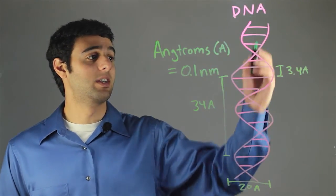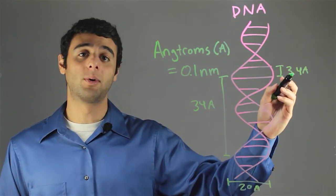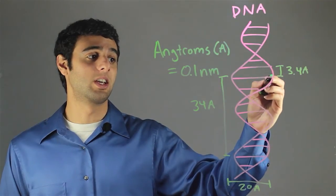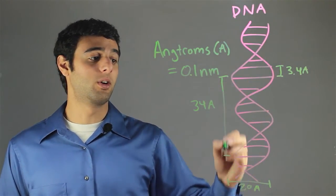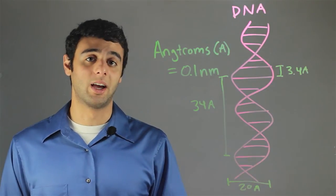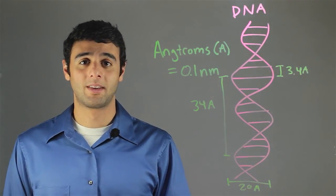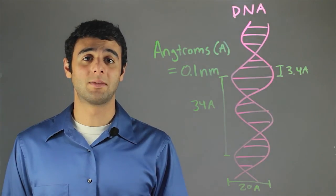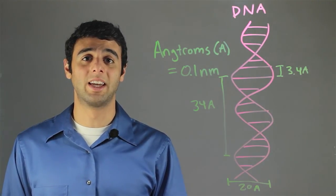So here we have a DNA molecule: 3.4 angstroms between adjacent base pairs, 34 angstroms for each full loop, and 20 angstroms for the diameter of the helix. I'm Michael Mehta and this has been The Size of a DNA Helix.